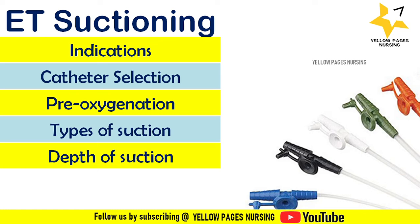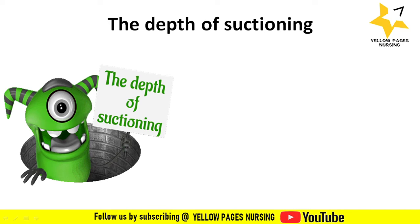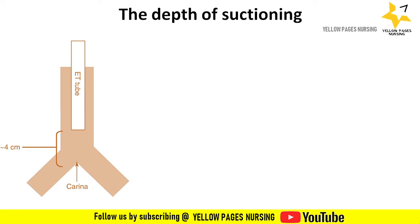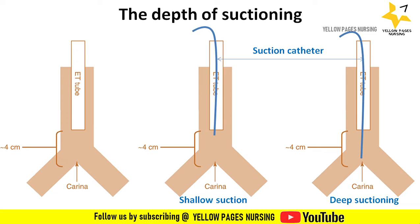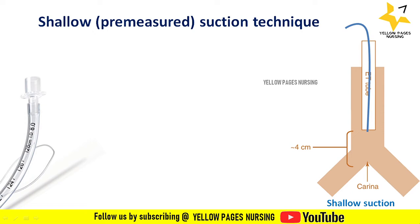Next is depth of suctioning: deep suctioning versus shallow suctioning. An image of the trachea shows the ET tube inserted 4 to 5 centimeters away from the carina. Shallow suctioning — also called premature suction technique — involves inserting the catheter approximately 0.5 to 1 centimeter beyond the length of the endotracheal tube, just to the tip of the ET tube.